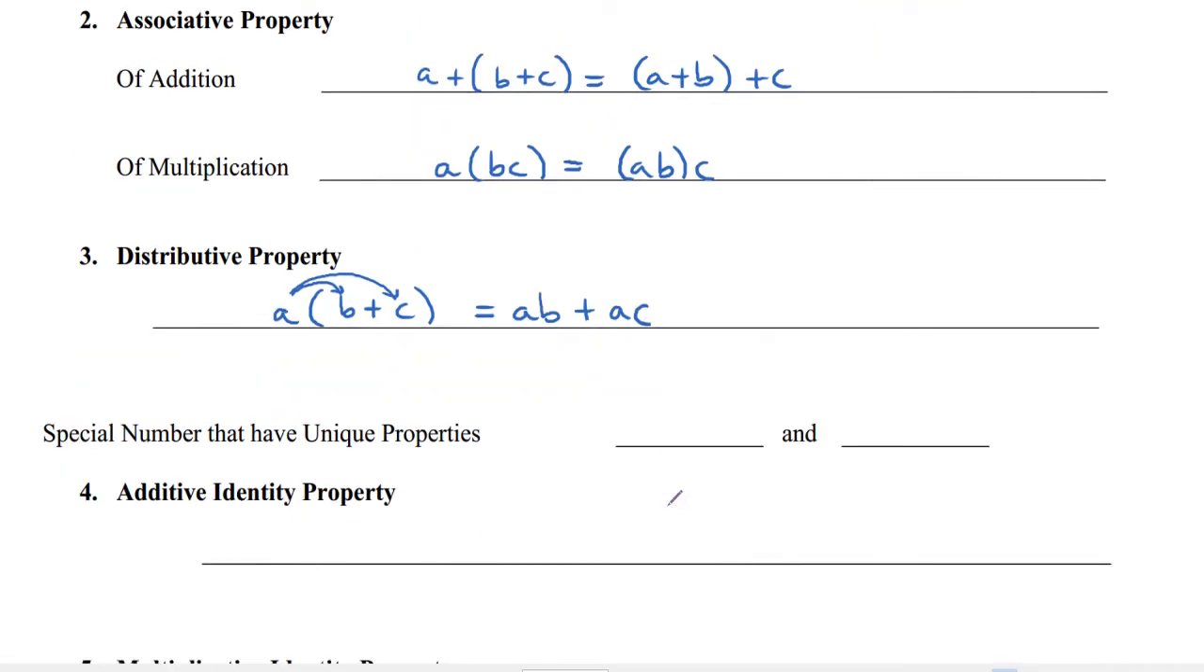So multiplication distributes over addition. That's what that means. Multiplication distributes over the addition property. Now even if this is a subtraction, you can still have the distributive property. But yeah, this is just what it looks like.